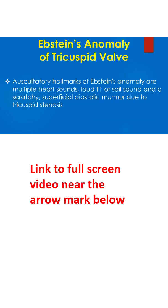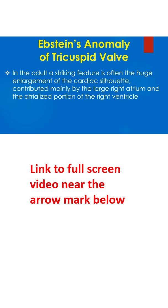Auscultatory hallmarks of Ebstein's anomaly are multiple heart sounds, a loud T1 or sail sound, and a scratchy superficial diastolic murmur due to tricuspid stenosis. In the adult, a striking feature is often the huge enlargement of the cardiac silhouette, contributed mainly by the large right atrium and the atrialized portion of the right ventricle.